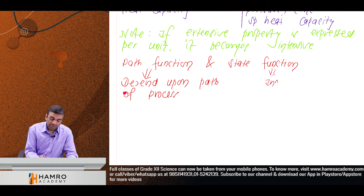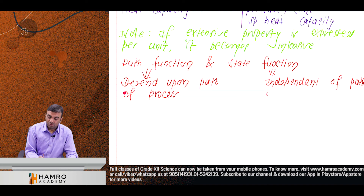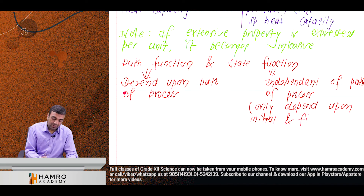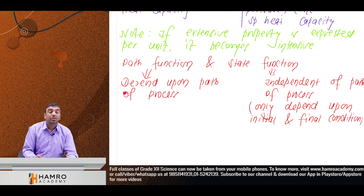A state function is independent of the path of the process. It depends only upon the initial and final conditions.